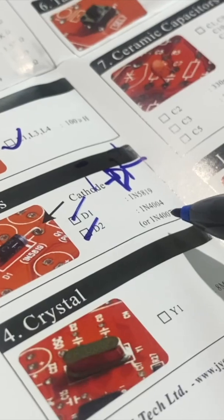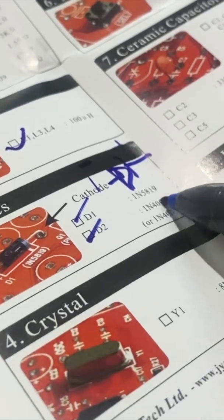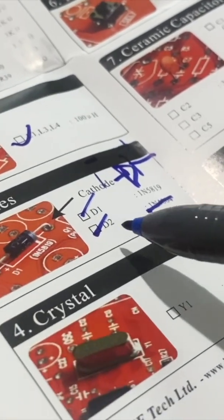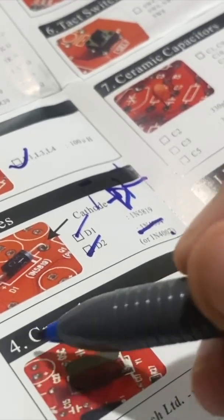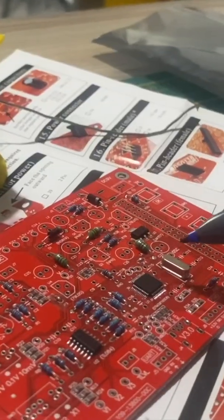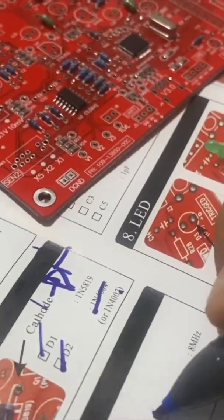So we will move to the next component which is crystals. I'm also done with the crystal, so I will come here and check the crystal. I'm done with the crystal, so next component is USB socket. We will go to USB socket.